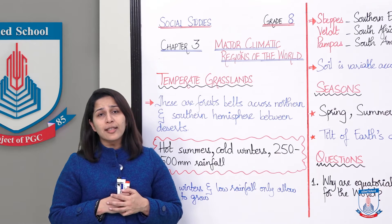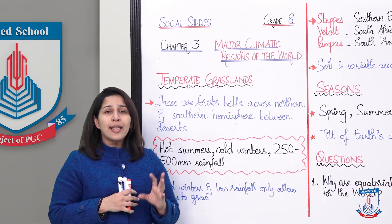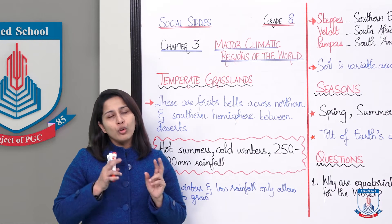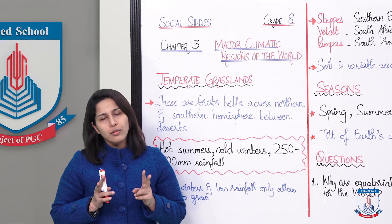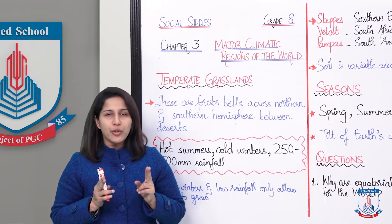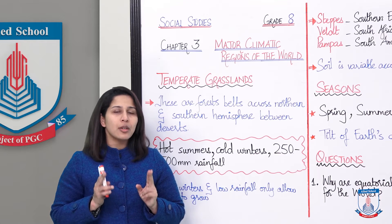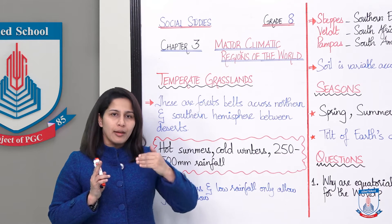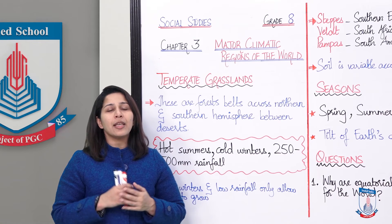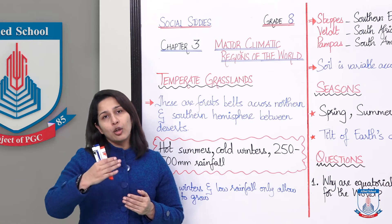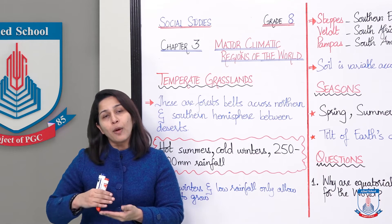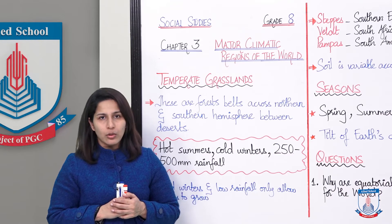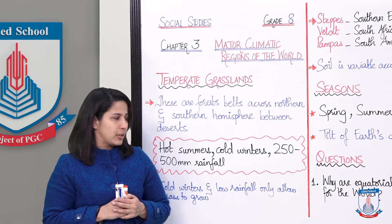These grasslands have temperatures that are extreme in both seasons — summer and winter. In summers there is a lot of heat, and in winters there is a significant drop in temperature, and it can lead to icy cold winters.